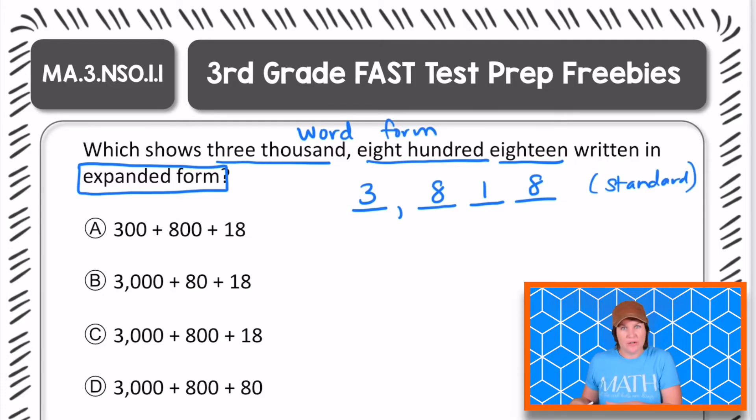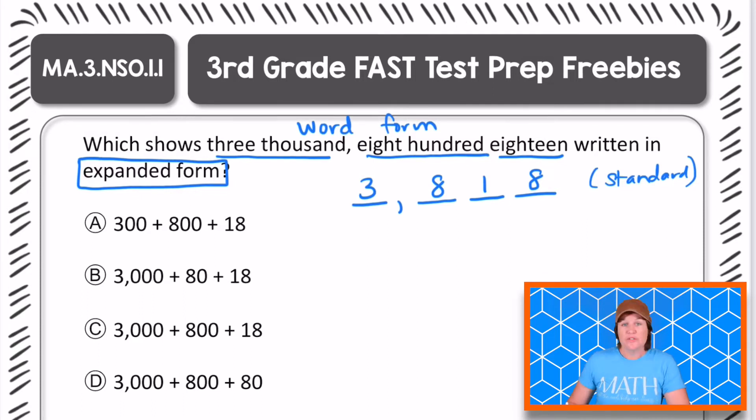We don't want the answer in standard form though. We're going to use our standard form answer to help us create the expanded form answer. So let's take the first digit. The digit 3 has a value of 3,000 plus our next digit is 8 and 8 in this hundreds place has a value of 800.